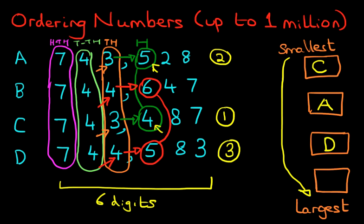And lastly, we've got this one here — four — which is B, making it the largest number. And that is how we order numbers up to one million. Start on the left hand side and work gradually across. Have a practice with a few numbers.